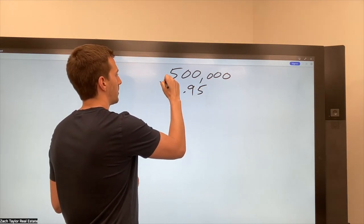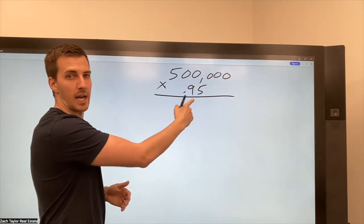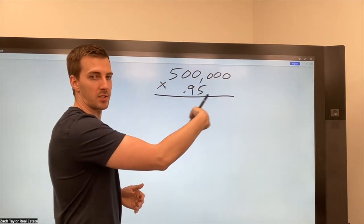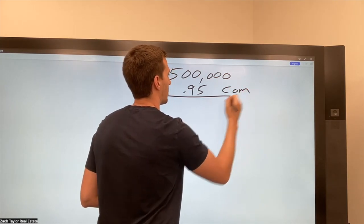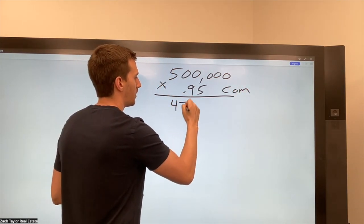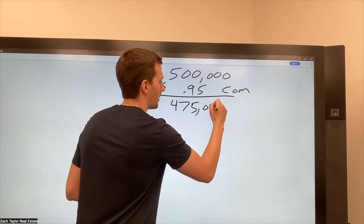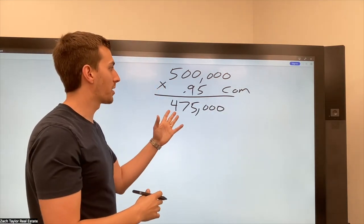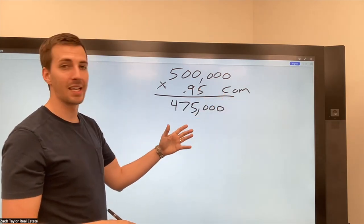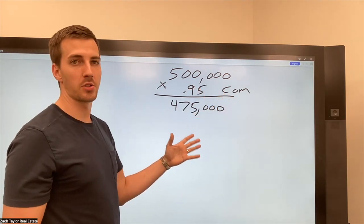You would times this by 0.95 because I'm taking 5%. That's the total commission. So let's write that down to commission. So I would get 475. That's my next line item, but there's a bigger expense usually than commissions. And that's the mortgage. A lot of sellers have a mortgage.